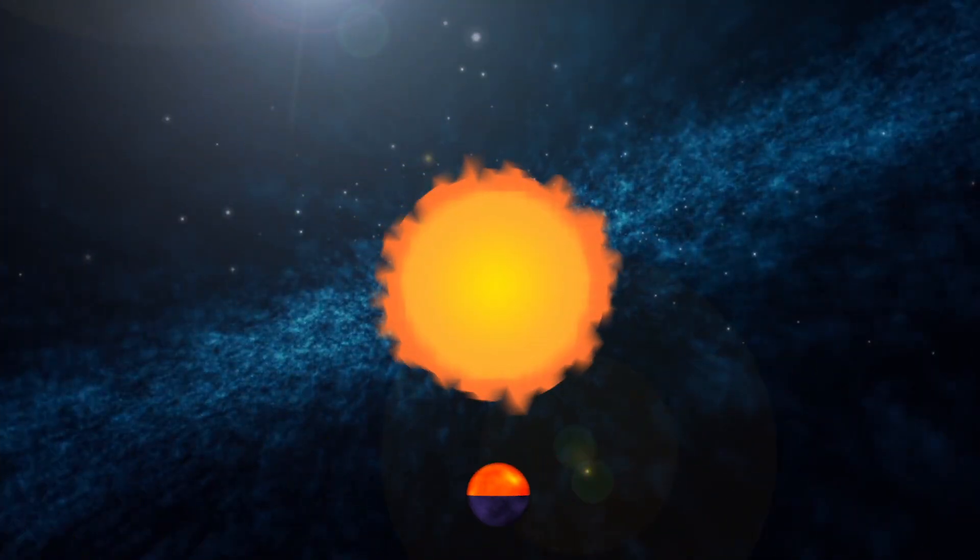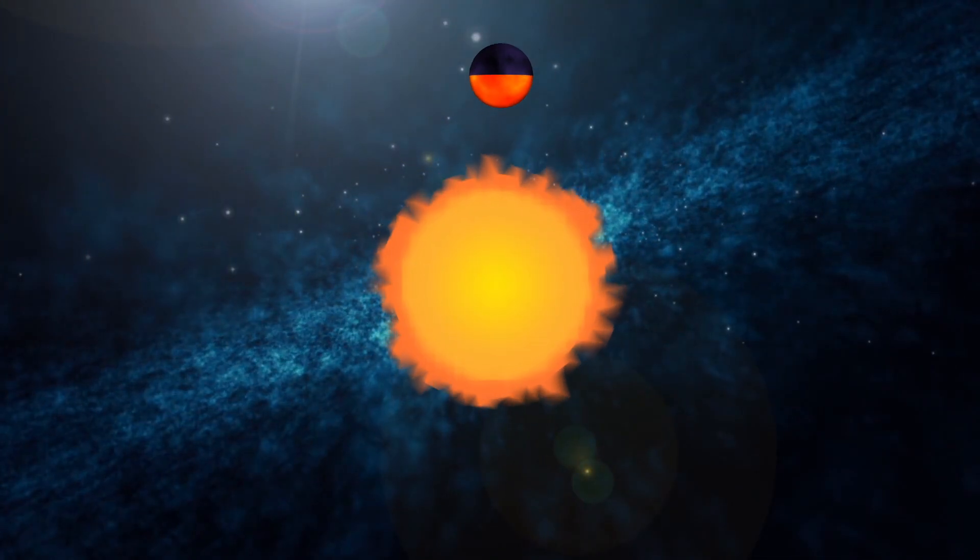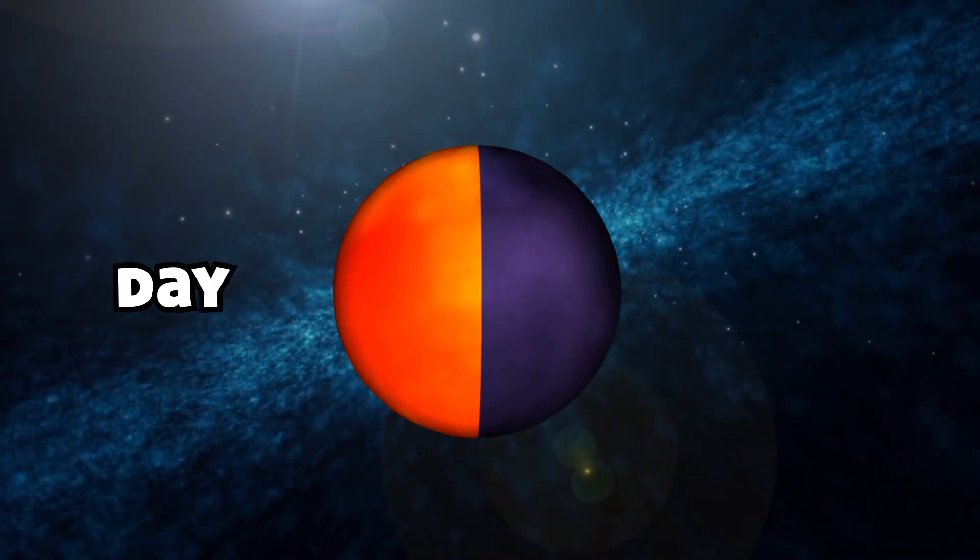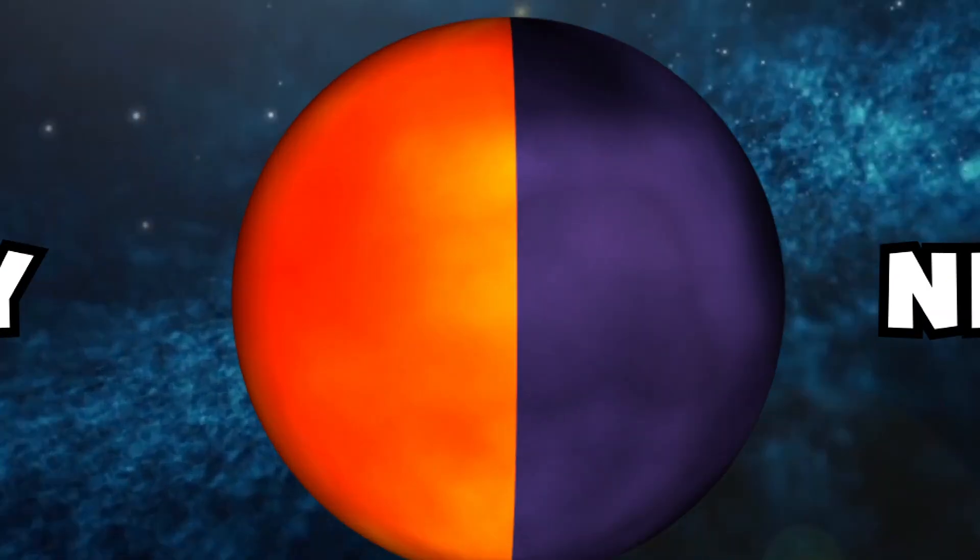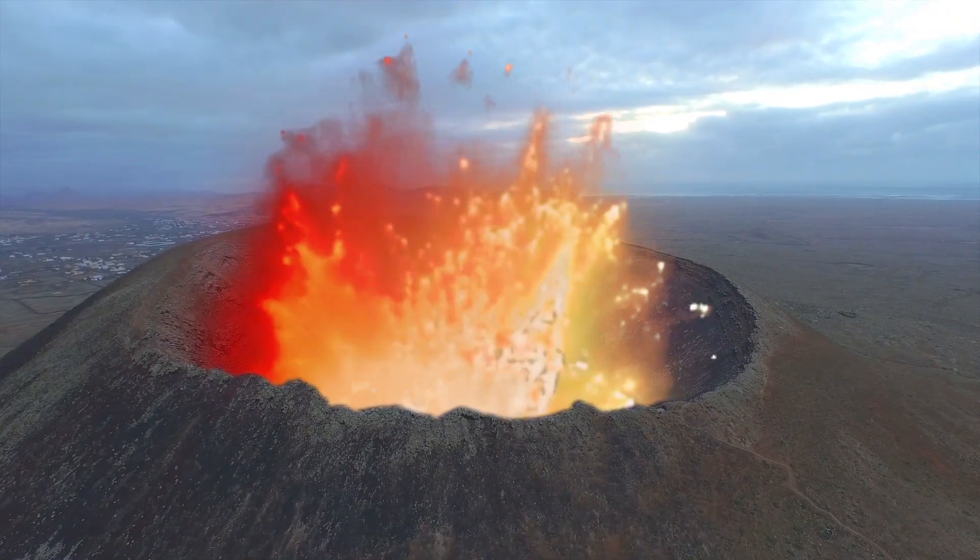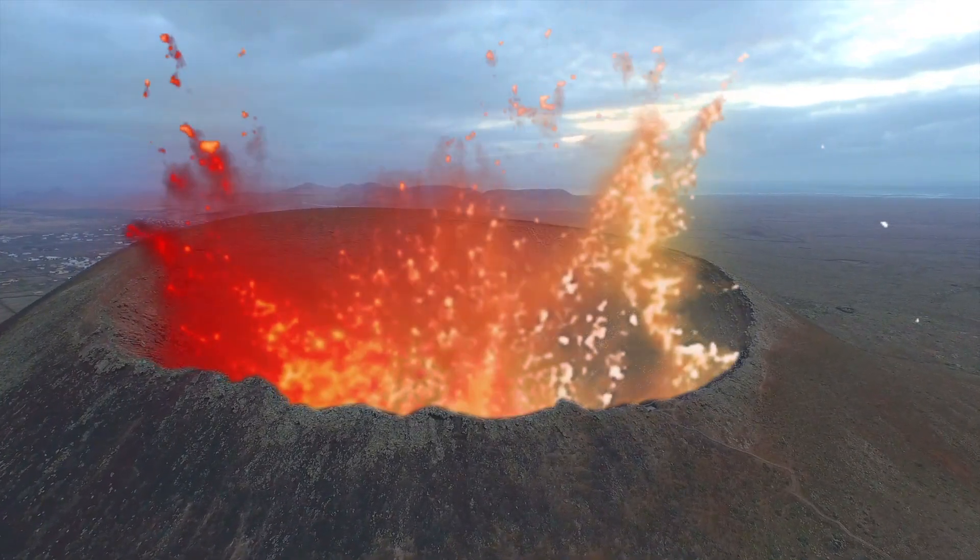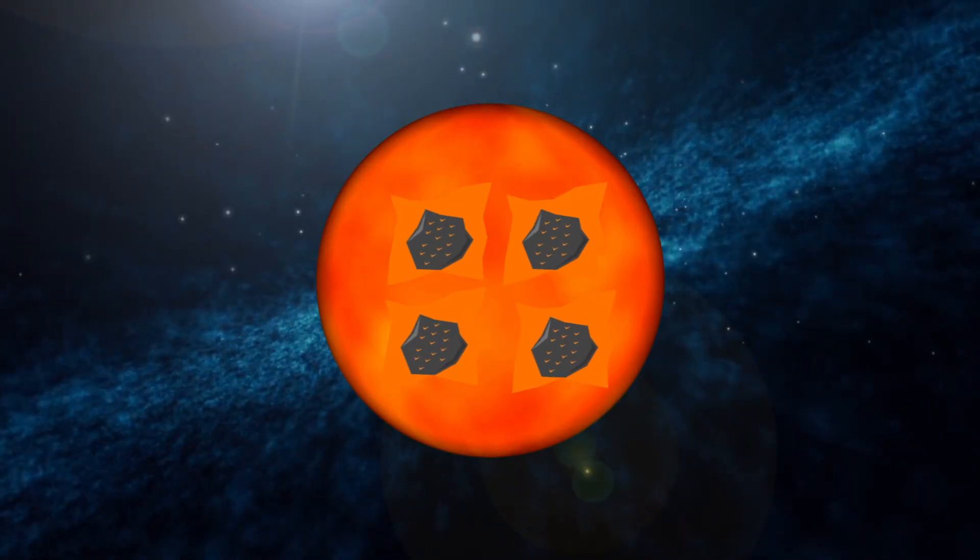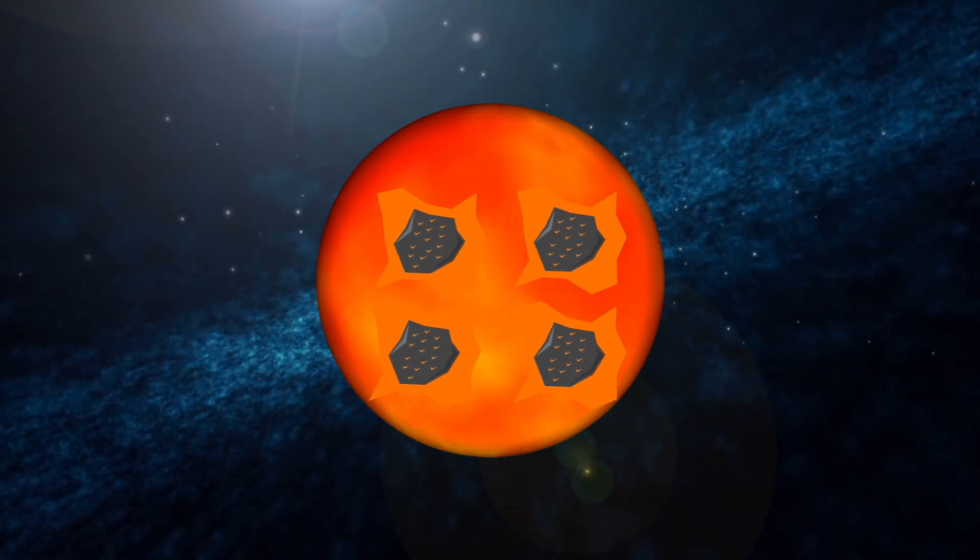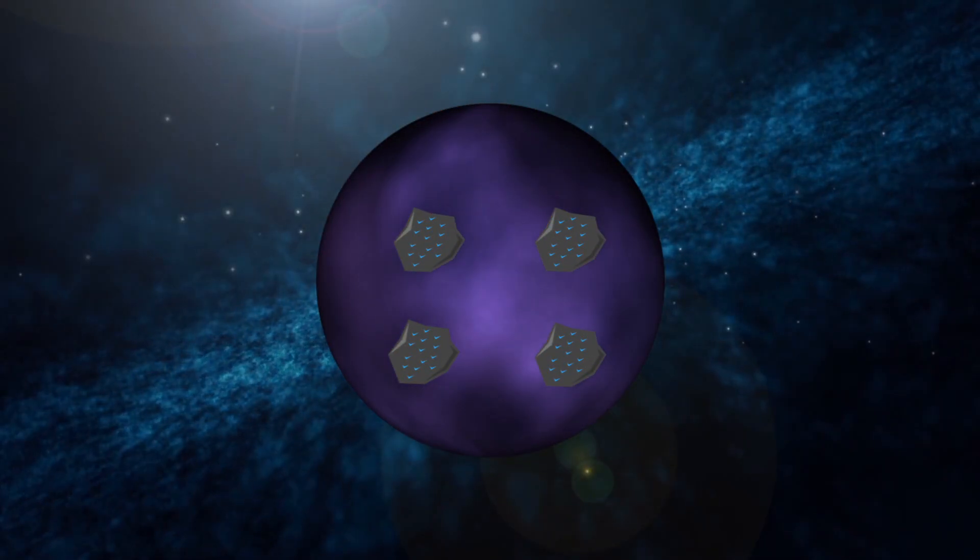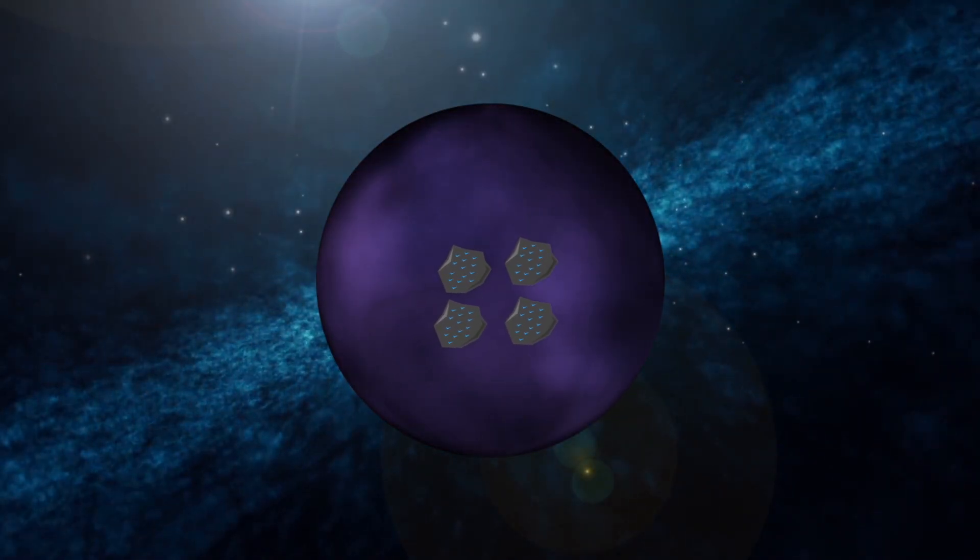As the planet is tidally locked, in which one side experiences permanent daylight while the other experiences perpetual nighttime, intense heat produced on the hotter side of the planet causes numerous volcanoes to erupt and launch magma into space. These molten rocks then get flung over to the colder side of the planet where it cools down and falls onto the planet as solid rocks.